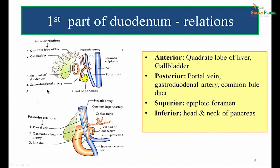The relations of the first part: anteriorly it is related to the quadrate lobe of liver and gallbladder. Posteriorly it is related to the portal vein, gastroduodenal artery, and common bile duct. Superiorly it is related to the epiploic foramen or foramen of Winslow. Inferiorly it is related to the head and neck of pancreas.